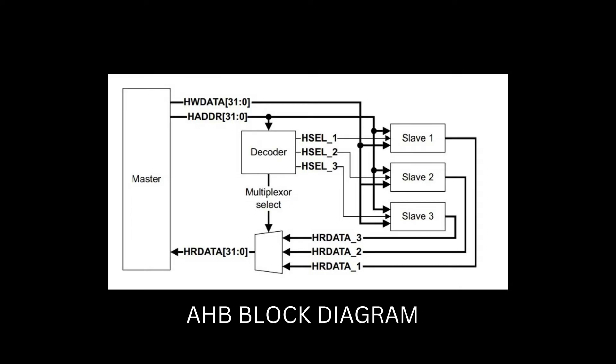The figure shows a single master AHB system design with the AHB master and three AHB slaves. The bus interconnect logic consists of one address decoder and a slave-to-master multiplexer. The decoder monitors the address from the master so that the appropriate slave is selected, and the multiplexer routes the corresponding slave output data back to the master. A master provides address and control information to initiate read and write operations.